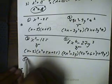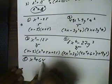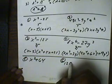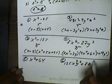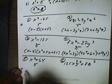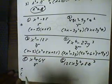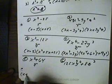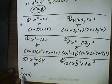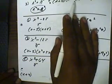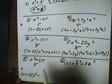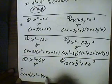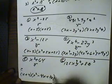Number 5: x cubed plus 64. This is the sum of two cubes. We take the cube root of all pieces: the cube root of x cubed is x, and the cube root of 64 is 4. So the first factor is (x plus 4). For the second factor, A squared gives x squared, minus A times B gives minus 4x, and plus B squared gives plus 16. So the factored form is (x plus 4)(x squared minus 4x plus 16).